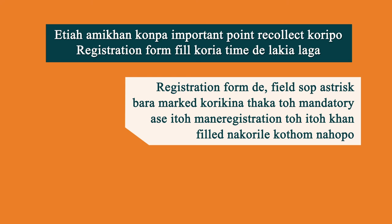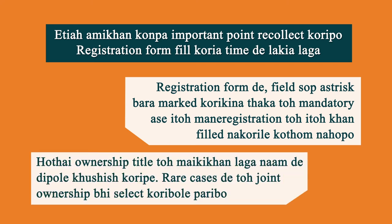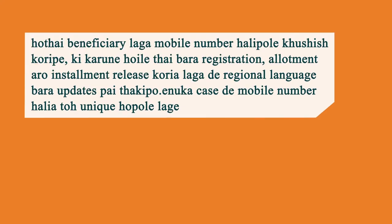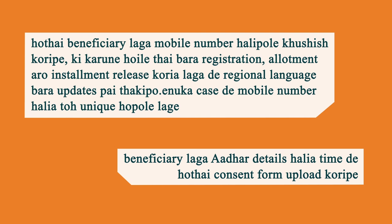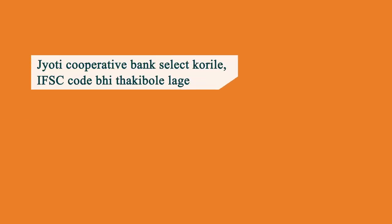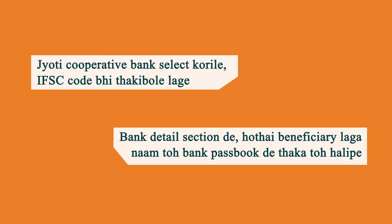All fields marked with an asterisk in the registration form are mandatory — registration will not be complete without filling those fields. Try to give the ownership title in the female member's name; joint ownership is selected only in rare cases. Always try to enter the beneficiary's mobile number so that updates regarding registration, allotment, and installment release are received in the regional language. The mobile number must be unique. When entering Aadhaar details, upload the consent form. If a cooperative bank is selected, the IFSC code must be provided. In the bank details section, always enter the beneficiary's name exactly as it appears in the bank passbook.